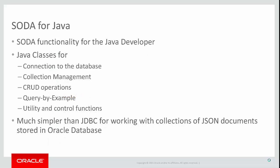SODA for Java provides SODA functionality for Java developers. It's a very simple set of five or six classes that make all of the SODA functionality available to the Java developer. These classes provide the ability to establish a connection to the document store, to create and drop collections, to perform CRUD operations on documents, to perform list and query-by-example operations on collections, as well as indexing and bulk insert capabilities. No knowledge of SQL is required in order to make use of SODA for Java, and developers can be up and running in a matter of minutes.